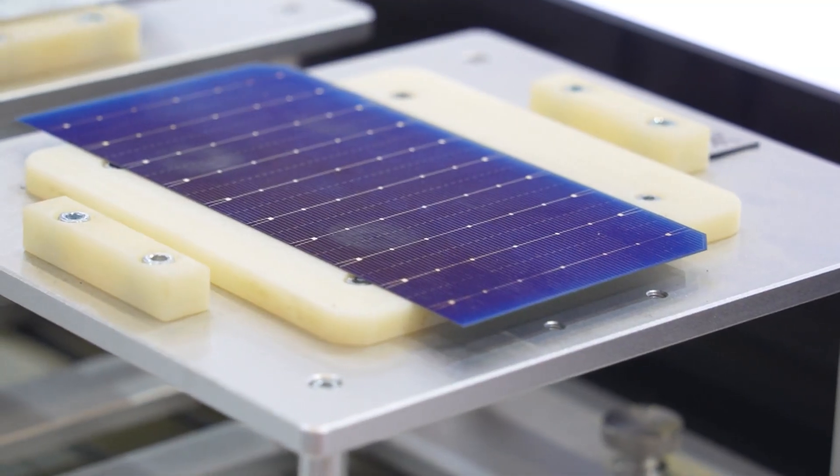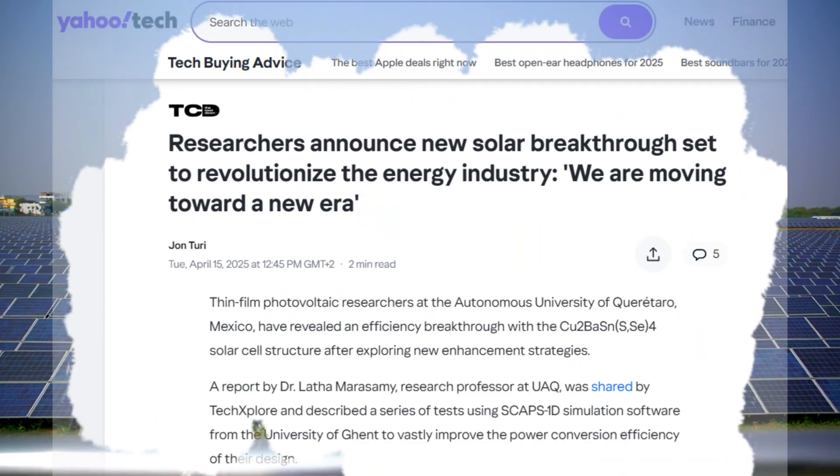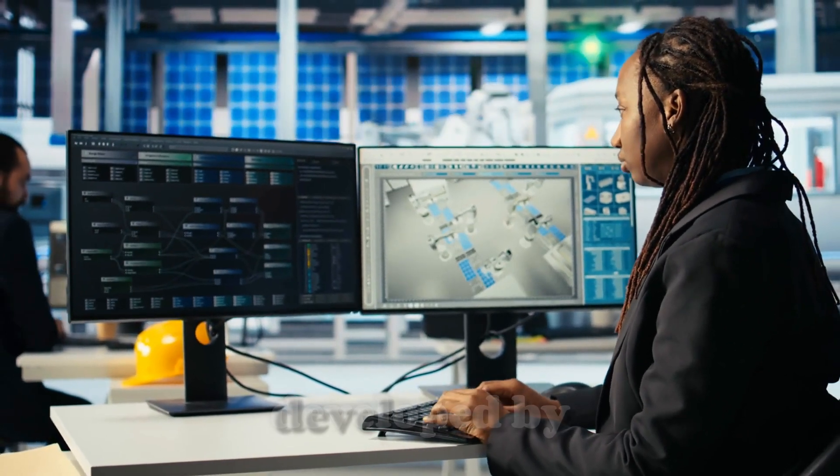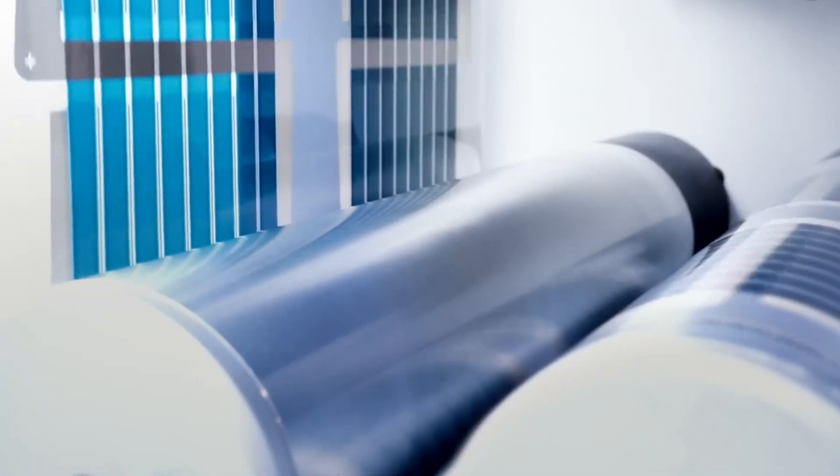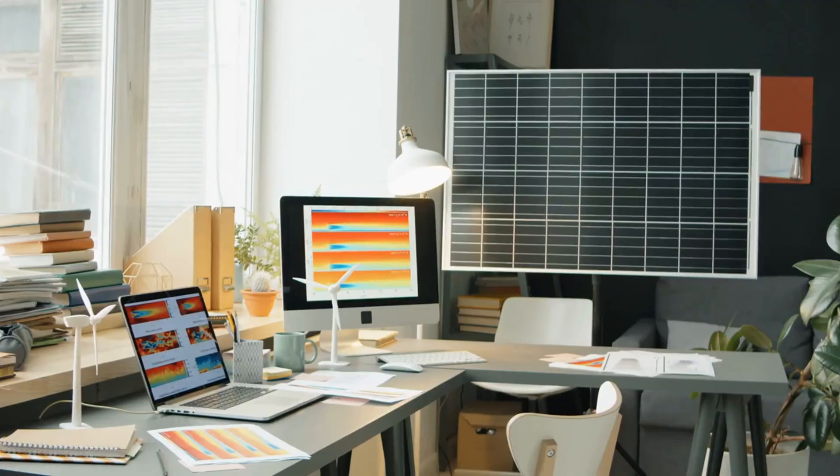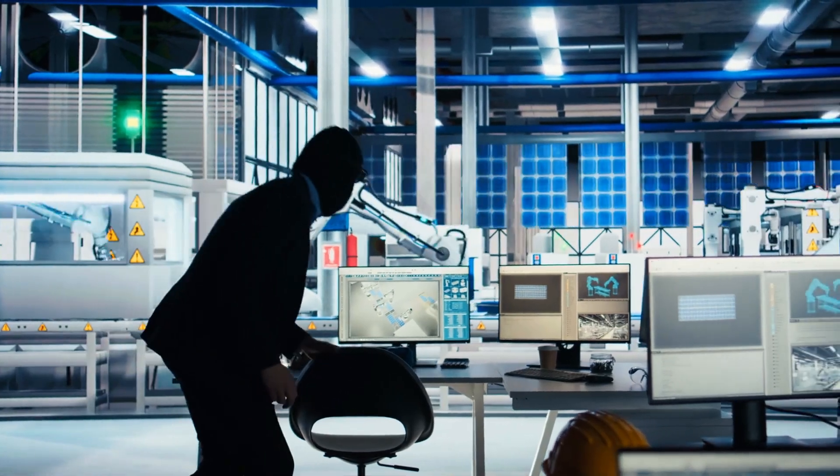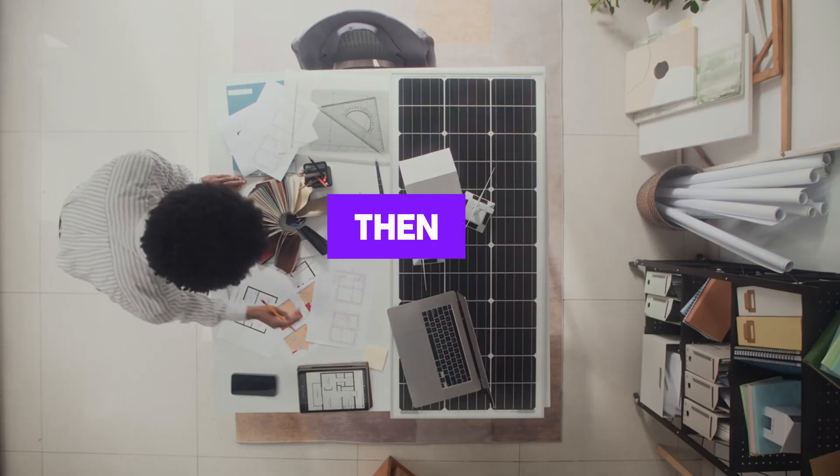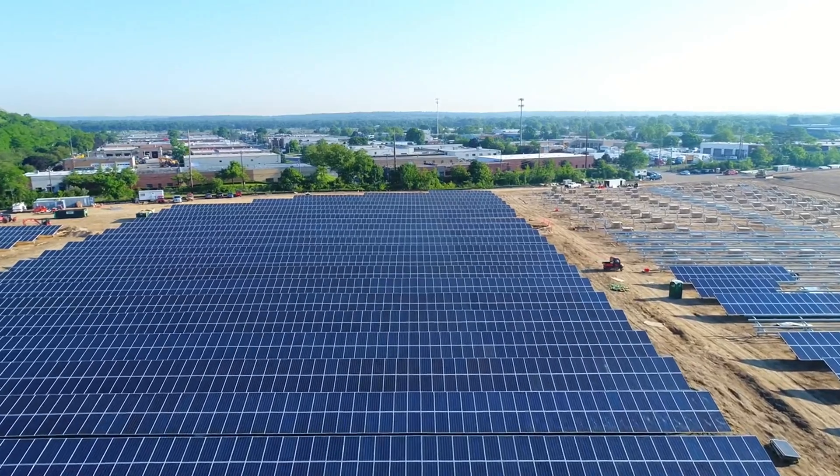So how did they do it? The team, led by Latha Marasamy, didn't just throw materials together and hope for the best. They used a tool called SCAPS-1D, developed by the University of Ghent in Belgium. This software simulates how thin-film solar cells behave without needing a physical prototype. Using it, the researchers ran 780 simulations. That's 780 different combinations, tweaks, and experiments digitally. Then, they implemented the most promising ideas in the lab.